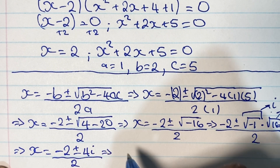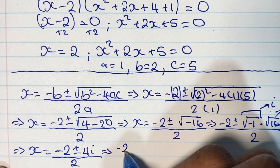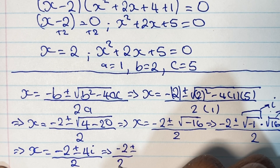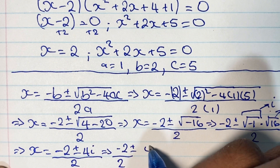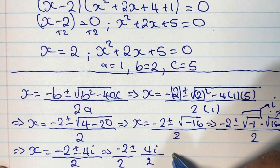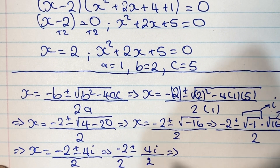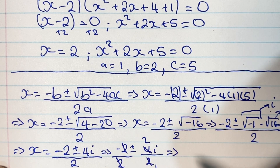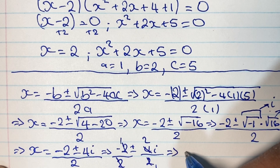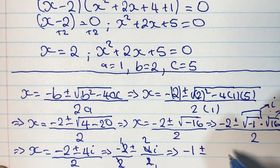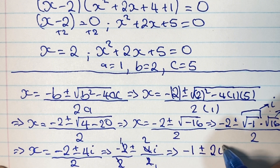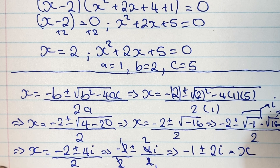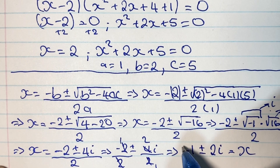We can simplify further by splitting the fraction: negative 2 over 2 plus or minus 4i over 2. We know that negative 2 divided by 2 is negative 1, and 4i divided by 2 is 2i. So our solutions are x equals negative 1 plus or minus 2i.